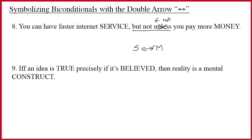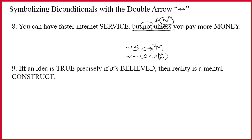Think about the meaning: 'You can have faster internet service, but not unless you pay more money.' If you have the faster service, did you have to pay more money? Yes. If you pay more money, would you have the faster service? Yes. So there's a correlation — which is exactly what the double arrow means. You might want to put tildes on both parts (tilde s double arrow tilde m), but by the principle that tildes can go anywhere, you can move both tildes out front, drop them in pairs, and get back to s double arrow m. It's best to just memorize 'but not unless' as a synonym for the double arrow.